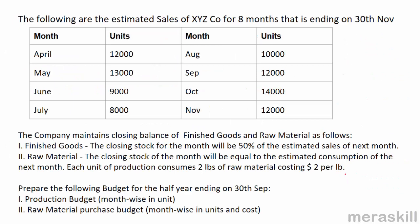Let's try another example. The following are the estimated sales of XYZ company for eight months ending 30th November — from April through November. The company maintains closing balances of finished goods equal to 50% of the estimated sales of the next month, and raw material closing stock equal to the estimated consumption of next month.